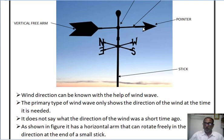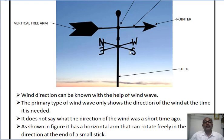To note the direction of wind, N, S, E, W letters are engraved and fitted on the arm. These grooved letters are fitted, which show the direction of north, south, east, and west respectively.